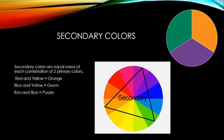Next are secondary colors: equal 50/50 mixes of two primary colors. Red and yellow give us orange, blue and yellow give us green, and red and blue give us purple. Of course you can mix different amounts to get many different purples, but the secondary color is the halfway point between two primaries.